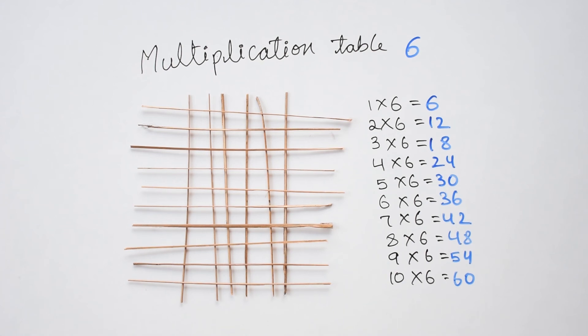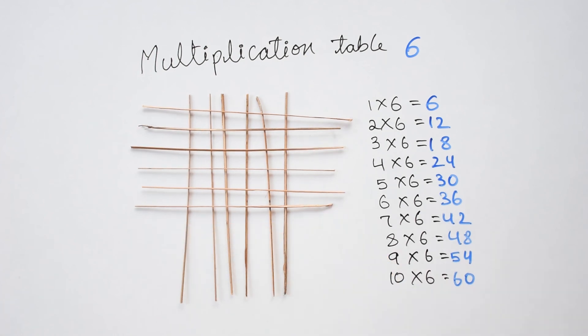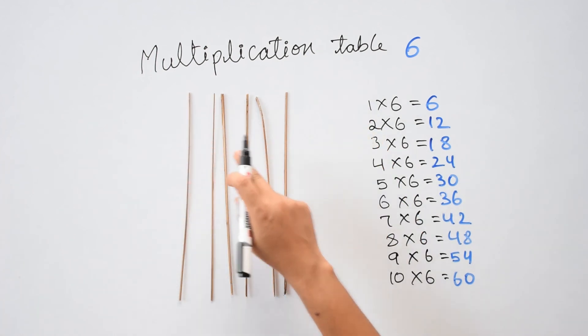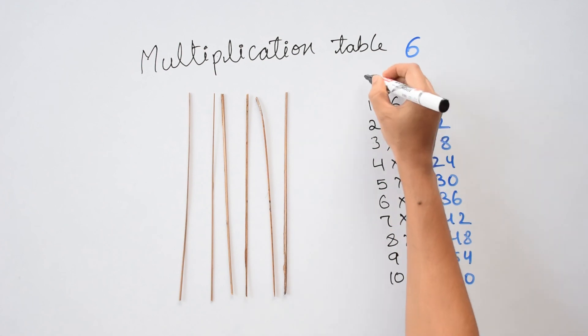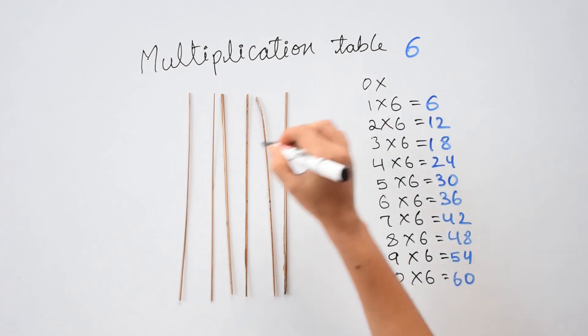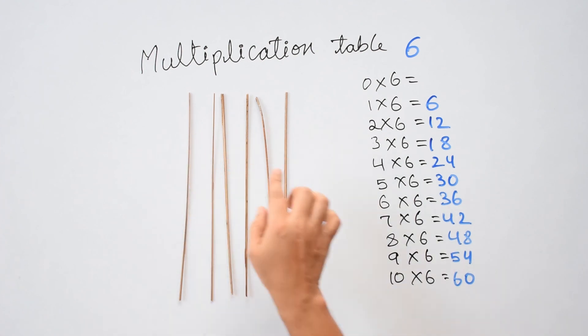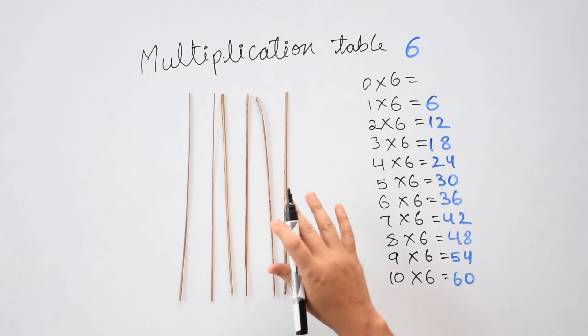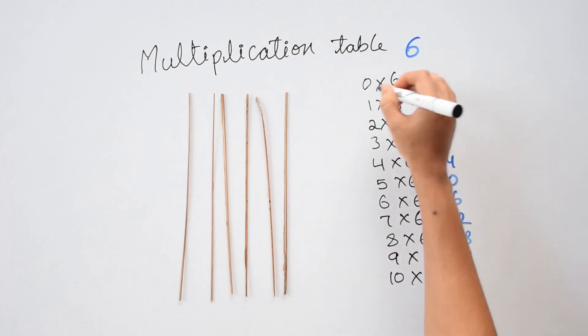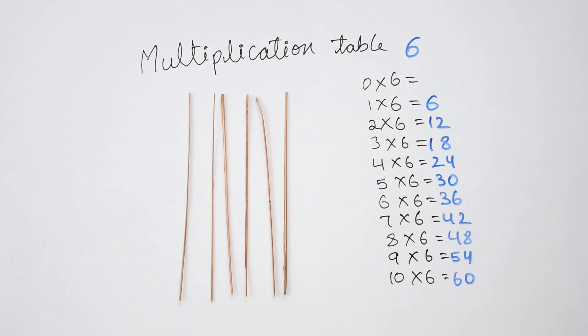Now, before we finish this video, let's remove all these sleeping sticks. Do we have any sleeping sticks here? No. That means it's 0 times 6 equals to, do we have any meeting points between sleeping and standing lines? No. We do not have sleeping sticks itself. So there are 0 meeting points. That means 0 times 6 is 0.